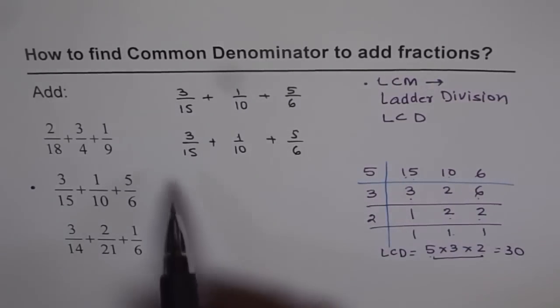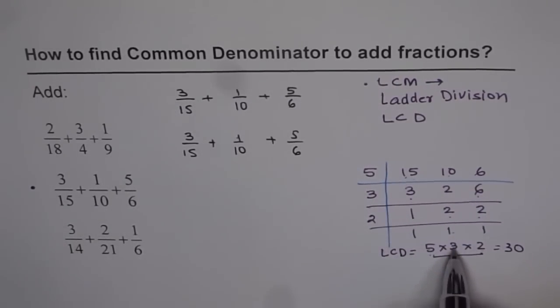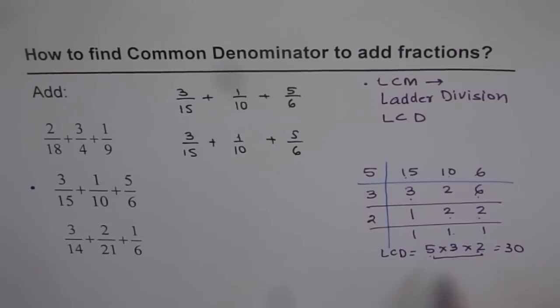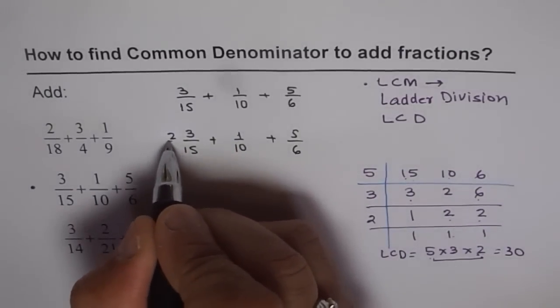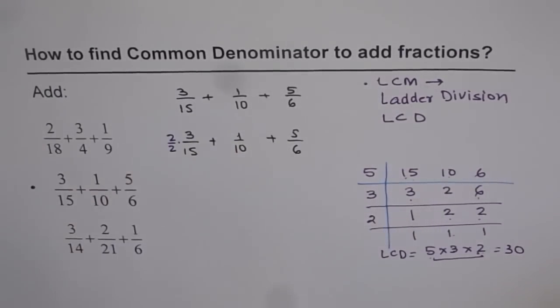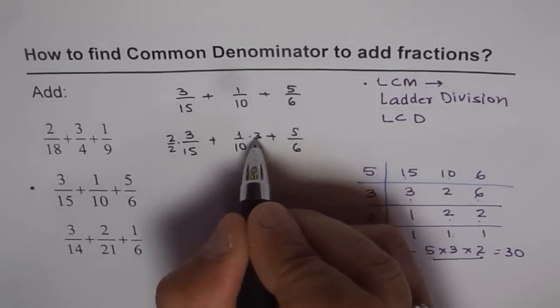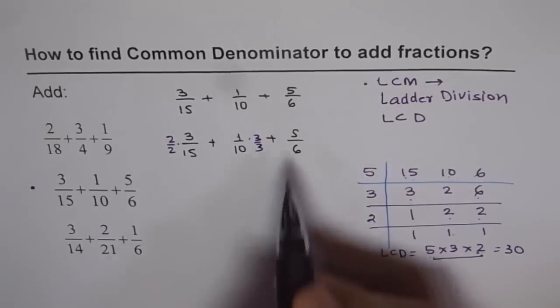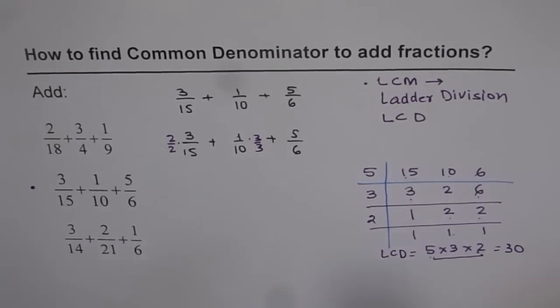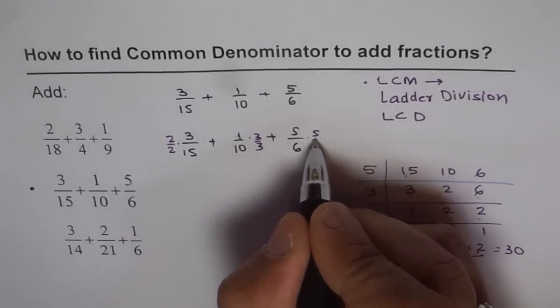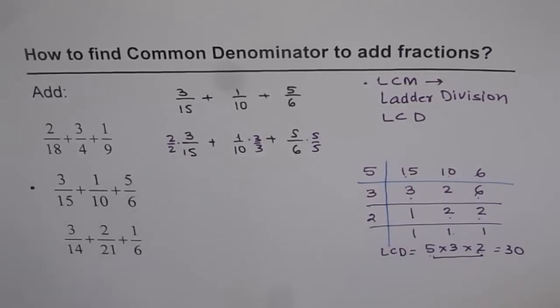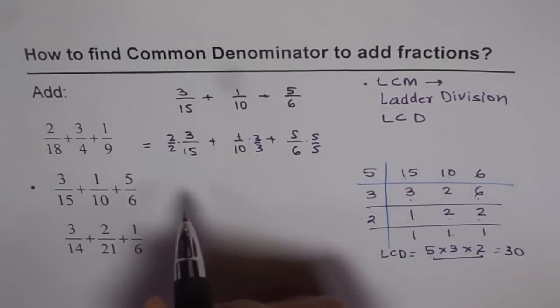So what we see here is 15. 5 times 3 is 15. Got to multiply by 2. So let's multiply both numerator and denominator by 2. 10 goes 3 times in 30. We all know about it. So let's do that. And 6 is 5 times. So 5 times 6 is 30. So once we do that, we get equivalent fractions.